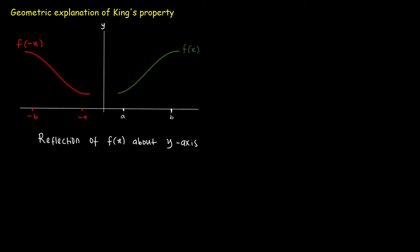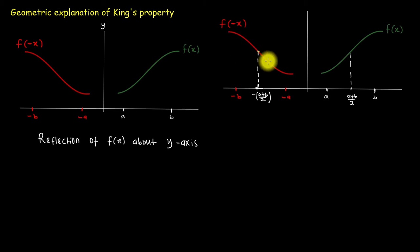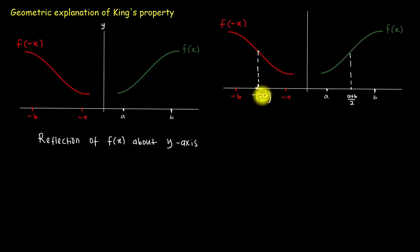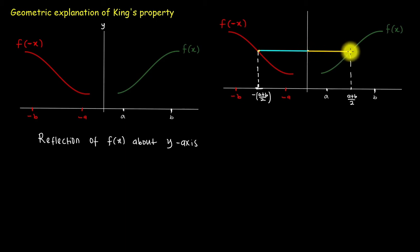Now let's consider the graph on the right-hand side. You will observe that the distance from the origin to the midpoint of a and b, which is (a + b)/2, is still the same thing as the distance from the origin to the midpoint of negative a and negative b, which is negative (a + b)/2.